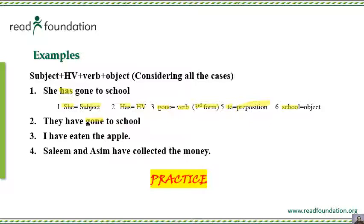Third example: 'I have eaten the apple.' With 'I' and 'you' — first person and second person pronouns — you always use the plural form 'have'. I will give a complete lecture on pronouns later. For now, understand that first and second person pronouns always take 'have'.